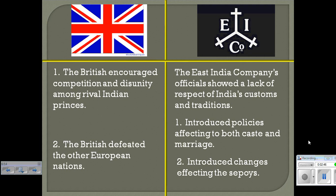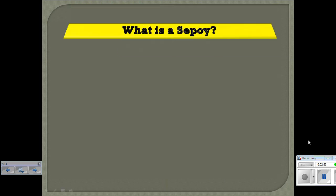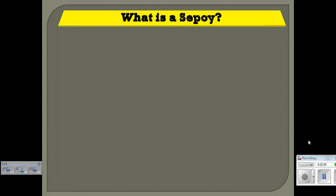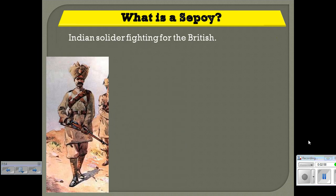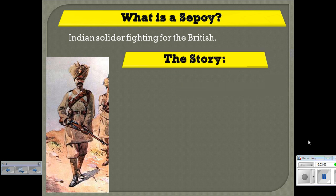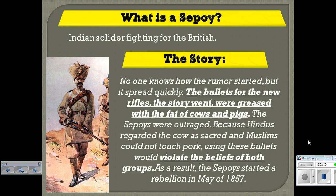They also introduce changes affecting the sepoys. A sepoy is an Indian soldier who is employed to fight for the British. And here is the story of what happens, because what we're going to see is that these soldiers have a rebellion.